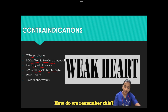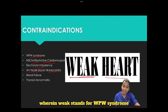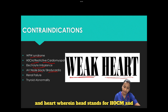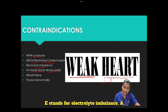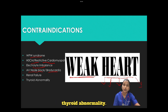To remember the contraindications, use the mnemonic 'WEAK HEART': W for WPW syndrome, H for HOCM and restrictive cardiomyopathy, E for electrolyte imbalance, A for AV block and bradycardia, R for renal failure, and T for thyroid abnormalities.